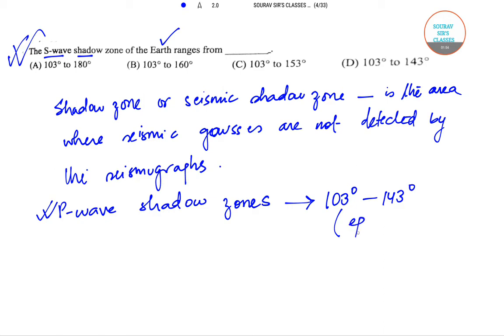So P-wave shadow zone is given by 103° to 143° from the epicenter, and for S-wave shadow zone you have 103° to 180° from the epicenter.